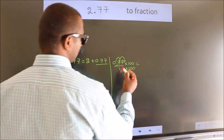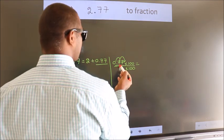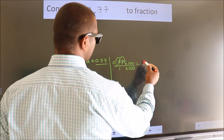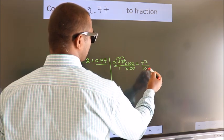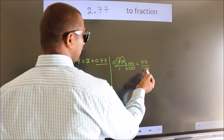Next, 0.77 into 100 is 77. 1 into 100 is 100. This is the fraction we got.